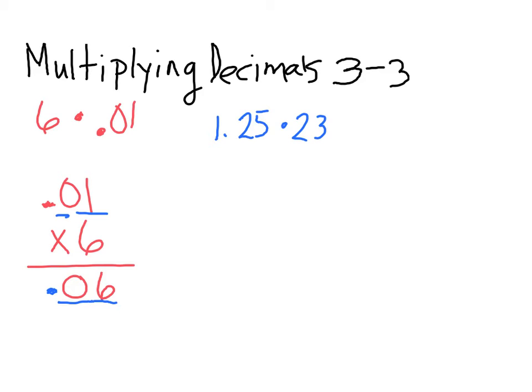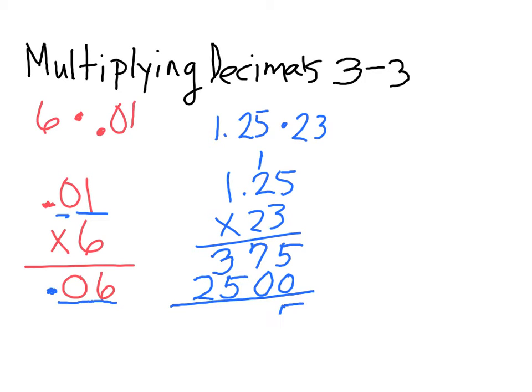Let's do the next one: 1.25 times 0.23. Ignore the decimal, just multiply like normal. 3 times 5 is 15. Carry your 1. 3 times 2 is 6, plus 1 is 7. 3 times 1 is 3. Then, 2 times 5. First put your 0 down. Then, 2 times 5 is 10. Carry your 1. 2 times 2 is 4, plus 1 is 5. Then, 2 times 1 is 2. Now you're ready to add them up. You have 5, 7, 8, 2.